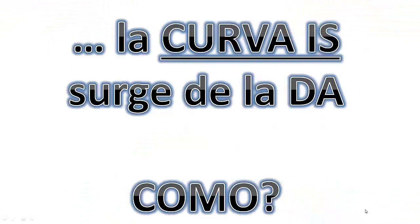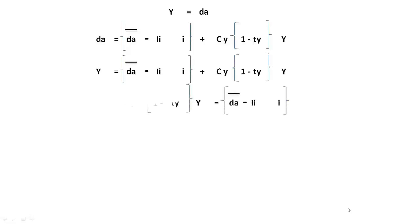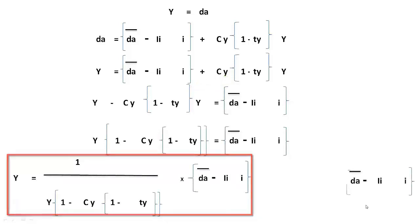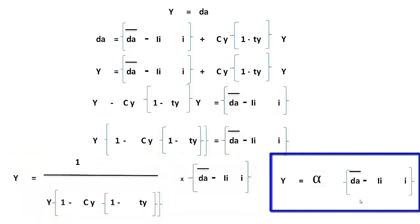La curva IS surge de la demanda agregada. El equilibrio en el mercado de bienes, que es lo que representa la recta IS, viene dado por la igualdad producción-renta igual a demanda agregada. La igualdad renta igual a demanda agregada me va a permitir obtener la expresión matemática de la recta IS. Sustituyendo la demanda agregada por su expresión y despejando, obtengo esta expresión, donde este término se llama multiplicador, representado por la letra alfa.